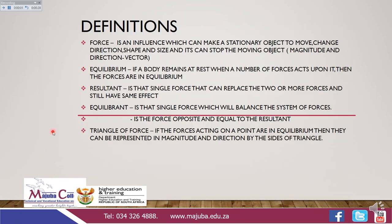Let's start with the definitions. Here we are going to define force using the four effects of force on an object. Force is the influence which can make a stationary object move, change direction, shape, and size, and it can stop a moving object.